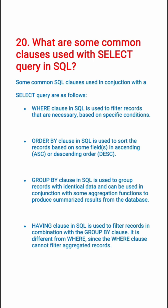The ORDER BY clause in SQL is used to sort the records based on some fields in ascending or descending order. The GROUP BY clause in SQL is used to group records with identical data and can be used in conjunction with some aggregative functions to produce summarized results from the database.